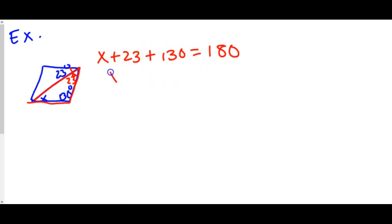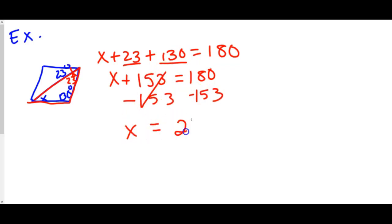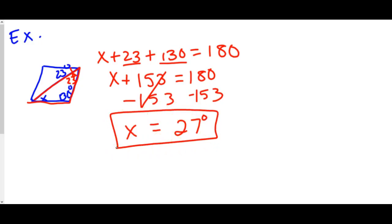Now we need to solve for x. We combine our like terms: 23 plus 130 is 153. Then we do the opposite and subtract 153 from both sides, which gives us x equals 27 degrees.